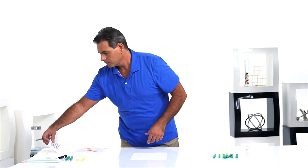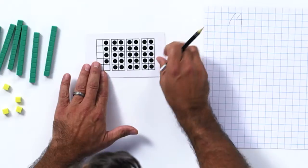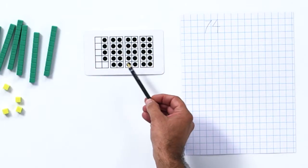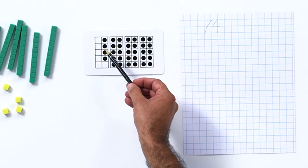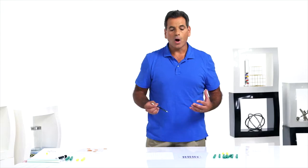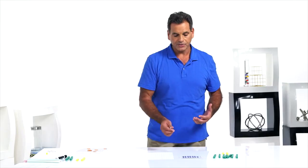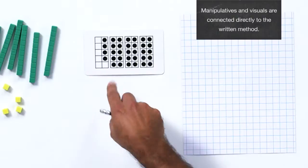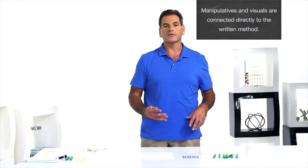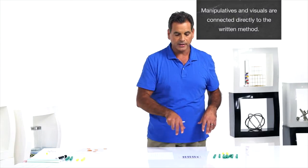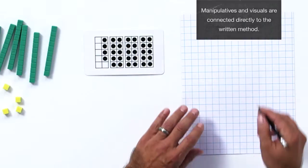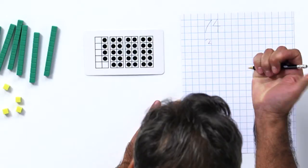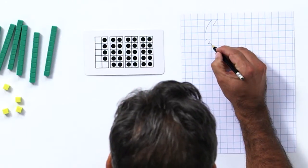74. Continue with that for a couple of days just using base 10 blocks or other concrete objects and then move to a more pictorial model like dot cards. Now the student has to go 10, 20, 30, 1, 2, 3, 4. We want them to be able to quickly see that this is 34, but that's going to take time. At first they'll go 10, 20, 34, but after a few days of practice on the dot cards they'll start to see quickly that that's three tens, 34.